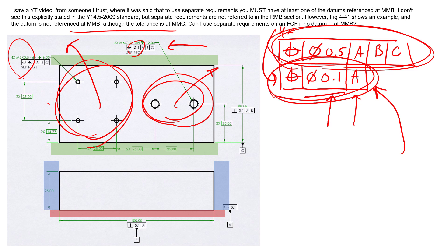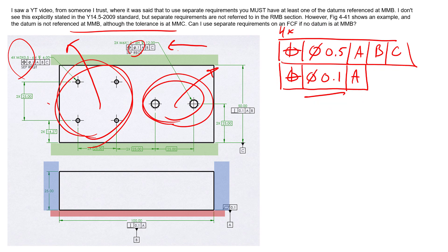This scheme is more than likely accomplishing what the individual asking this question was hoping for. The larger tolerance value controls where the pattern sits in the broader datum reference frame, while the tighter value ensures functional feature-to-feature control. The whole reason we need MMB in the fully-constrained example is because it allows datum shift — deviation of the pattern in one direction with respect to the other using the same datum reference frame. Multiple single segment is another tool to let patterns deviate separately while maintaining tight feature-to-feature control.